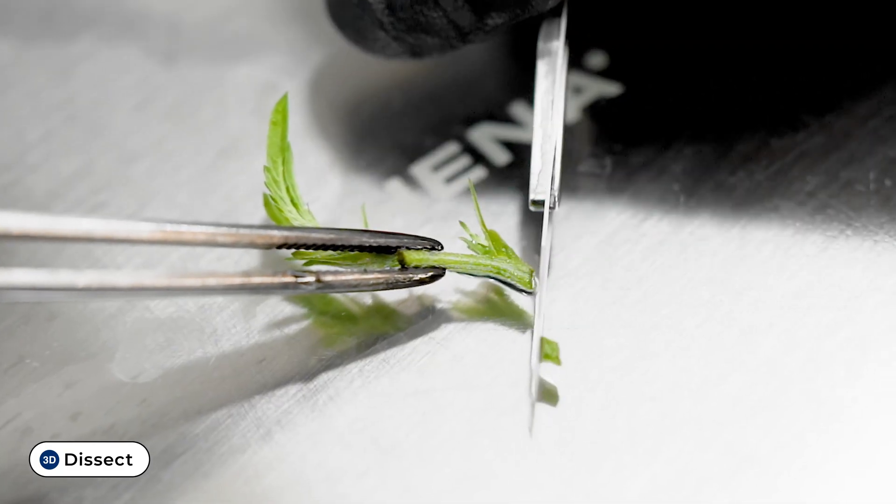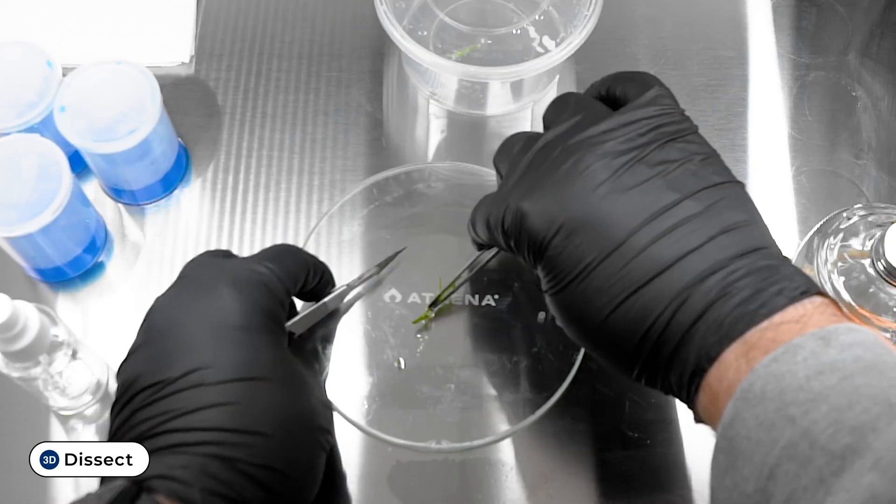While holding the node steady with forceps, dissect it at the lower end, leaving enough stem to go into the gel.